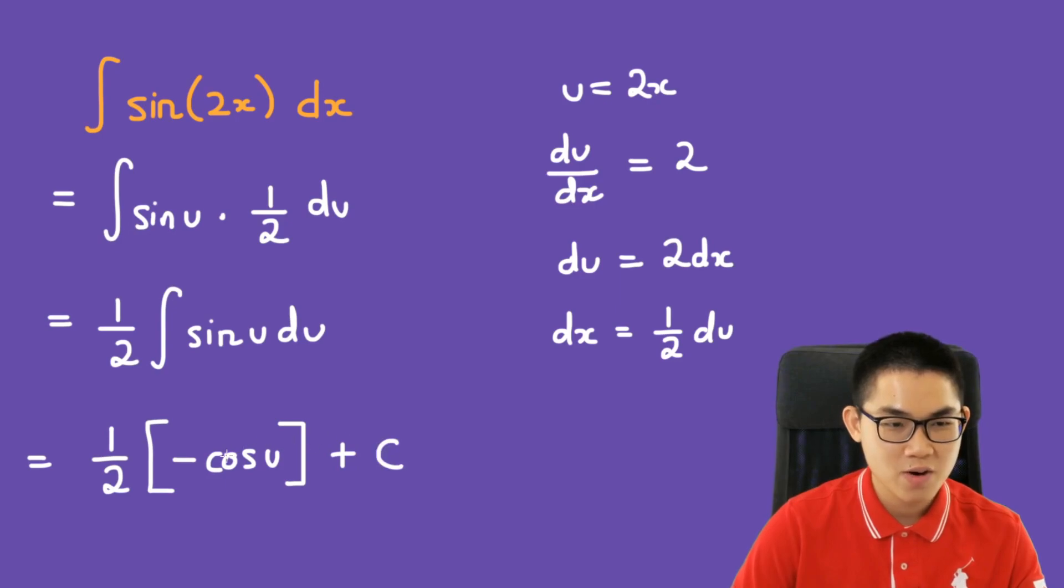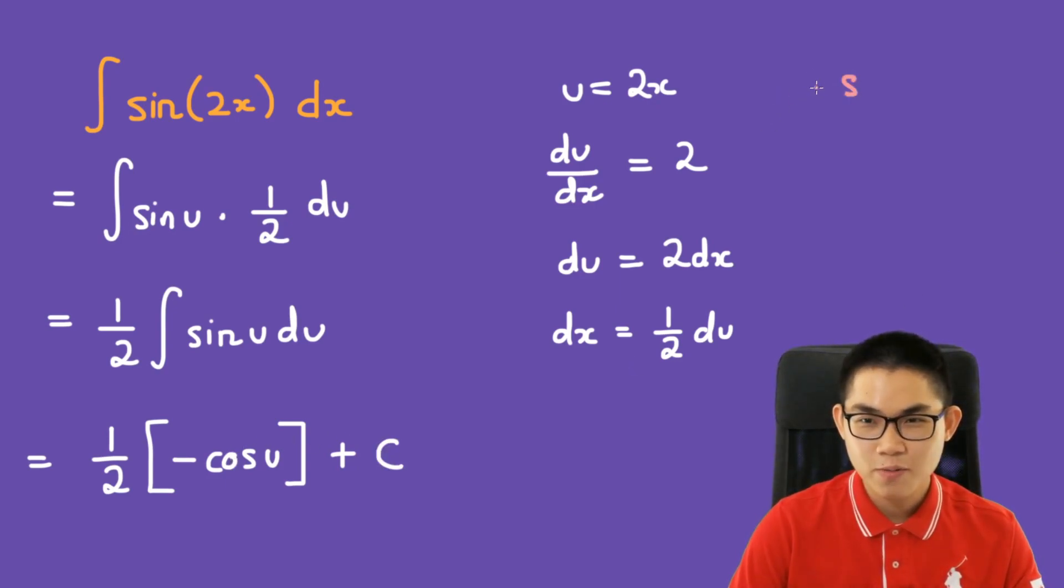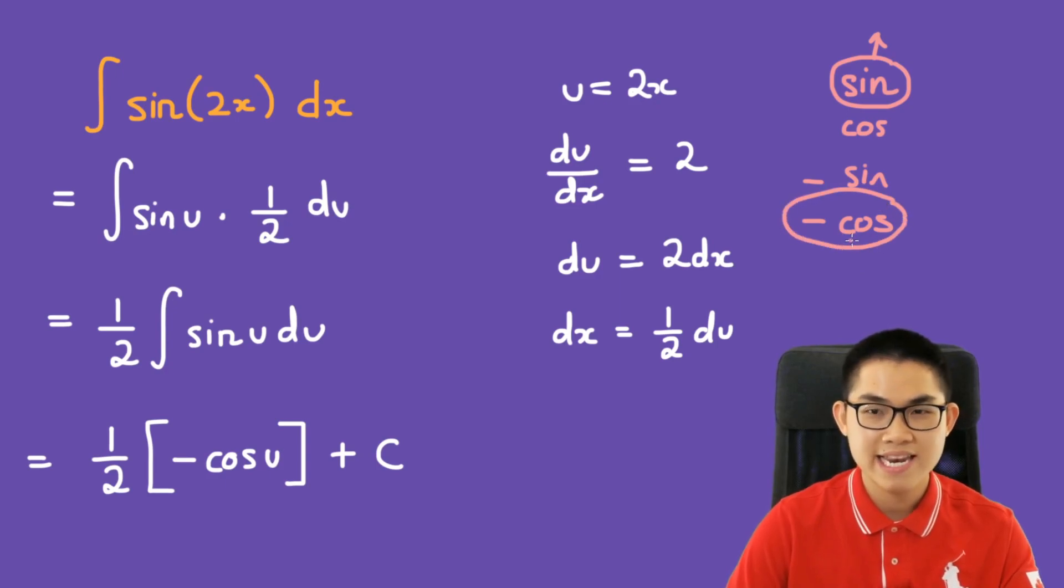So how do I know it's negative cos? I use this trick. Whenever I'm on a test, I just write down sine cos sine cos with two negative signs here. We're at sine, right? And then when we integrate, we go up. And so we end up over here, and we get negative cos.